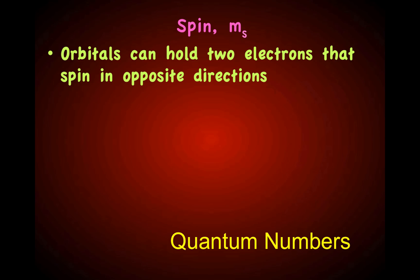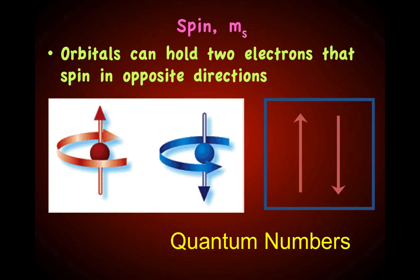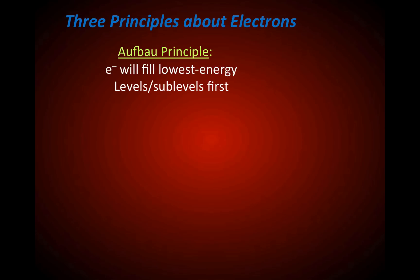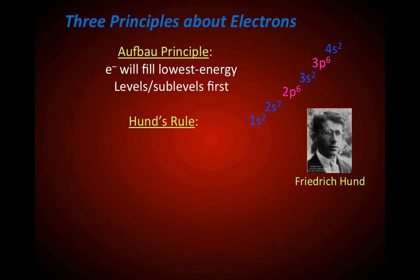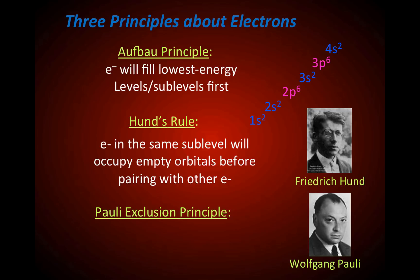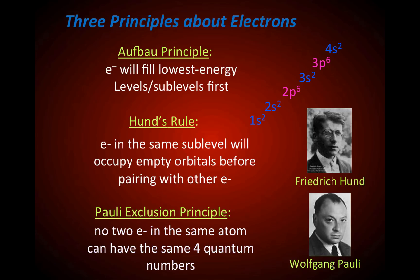The last quantum number is spin. Since orbitals can hold two electrons and each have a negative charge, they must spin in opposite directions. We denote spin by arrows — the first arrow pointing up for clockwise, and the downward arrow for counterclockwise. There are three principles about electrons: the Aufbau principle, Hund's rule, and the Pauli exclusion principle. The Aufbau principle says electrons fill the lowest energy levels and lowest energy sublevels first. Hund's rule says electrons in the same sublevel will occupy empty orbitals before pairing with other electrons. The Pauli exclusion principle states no two electrons in the same atom can have the same four quantum numbers.